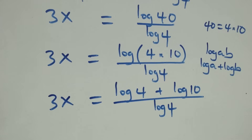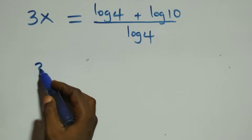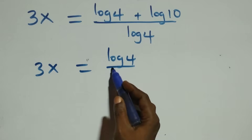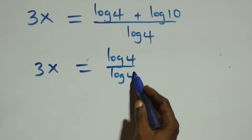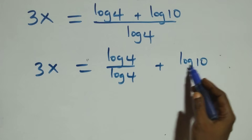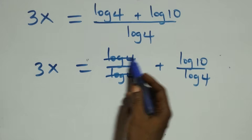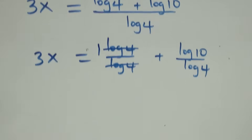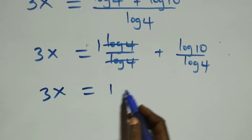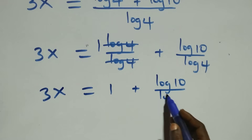Next step: we separate this into two fractions. We have three x equals log four over log four plus log ten over log four. Log four over log four cancels to give one, so three x equals one plus log ten over log four.